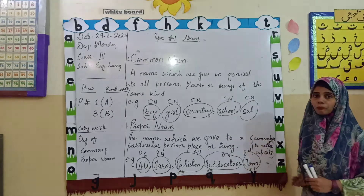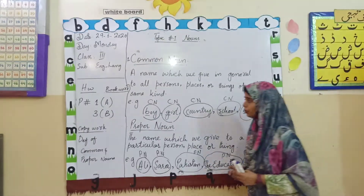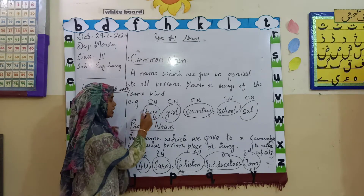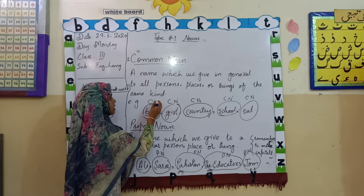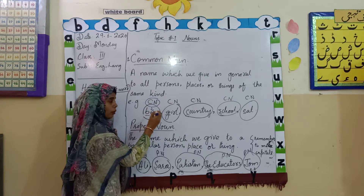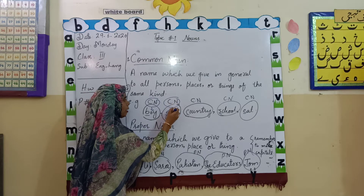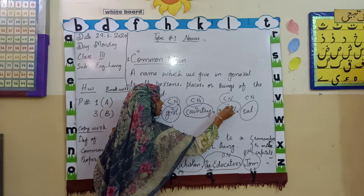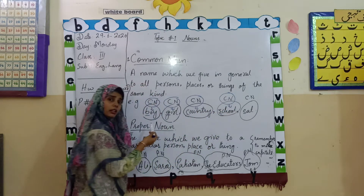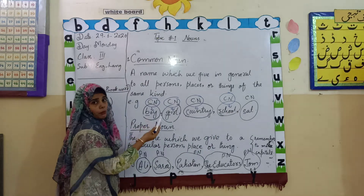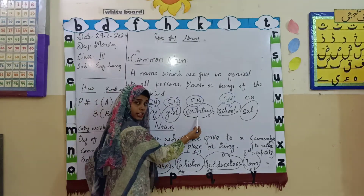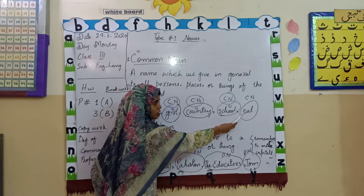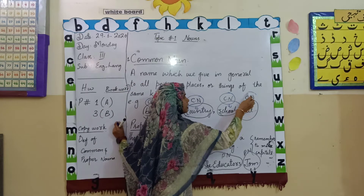Here you can see both of them. I have written CN — what is that? It is a short form of common noun. CN means: boy is a common noun, girl is a common noun, country is a common noun, school is a common noun. Why do we say these are common? Because there are many boys, many girls, many countries, many schools, and many animals. Common is cat.